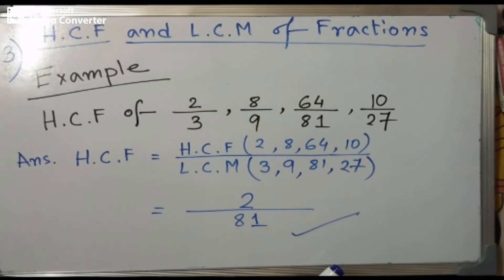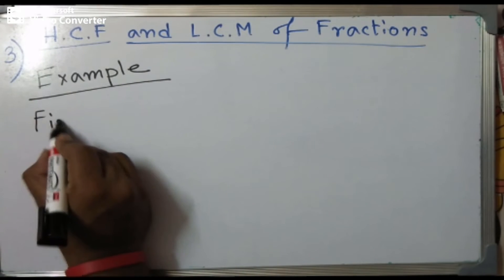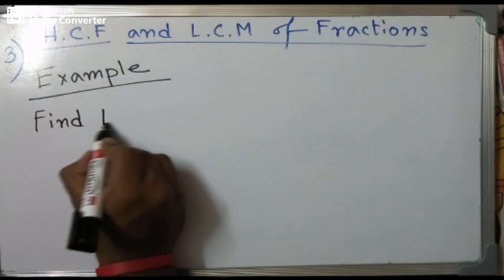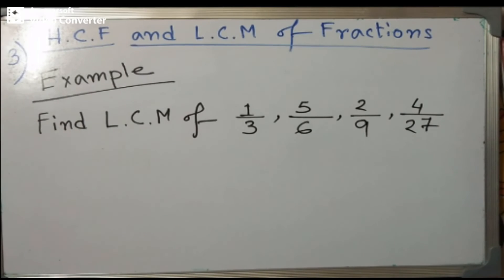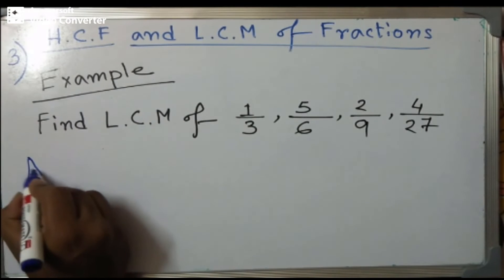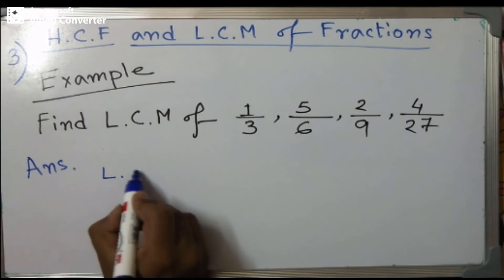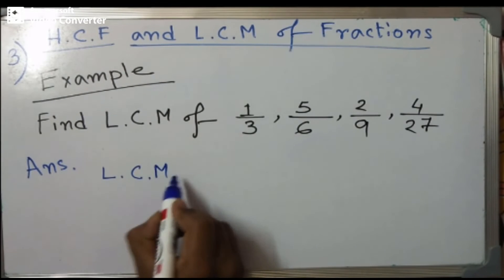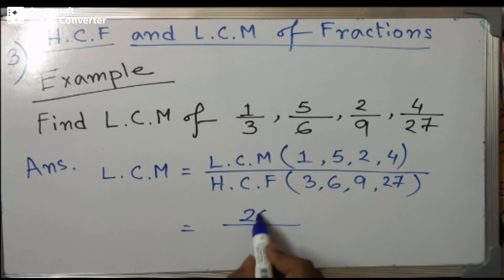Next: find the LCM of 1/3, 5/6, 2/9, and 4/27. According to the formula, find the LCM of the numerators 1, 5, 2, 4 — which is 20 — divided by the HCF of the denominators 3, 6, 9, and 27 — which is 3. So the LCM equals 20/3. I hope you understand how to find the HCF and LCM of fractional values.